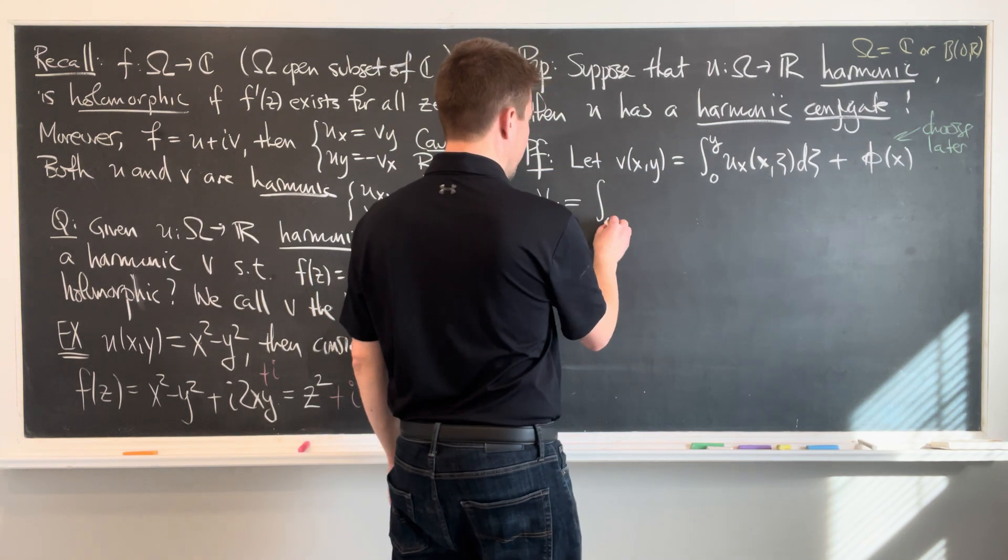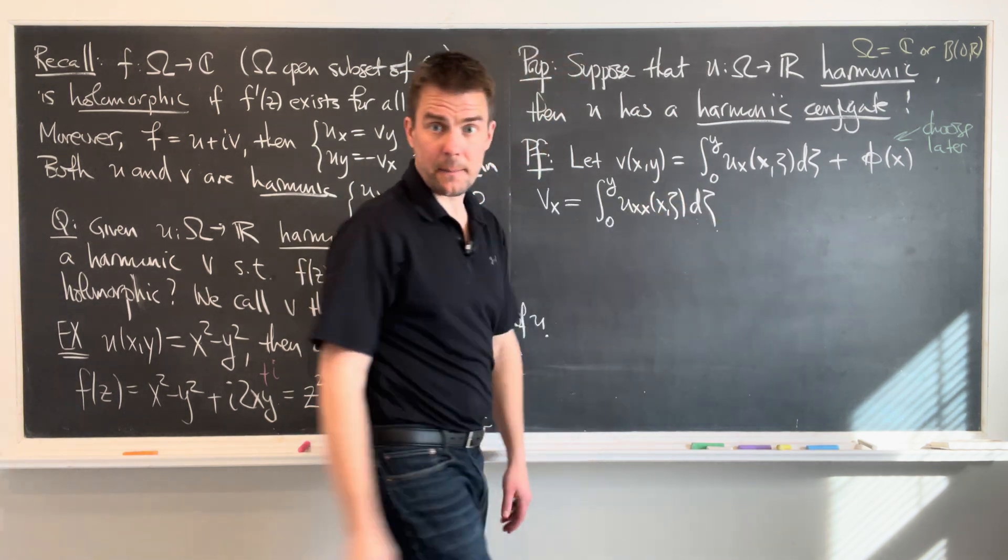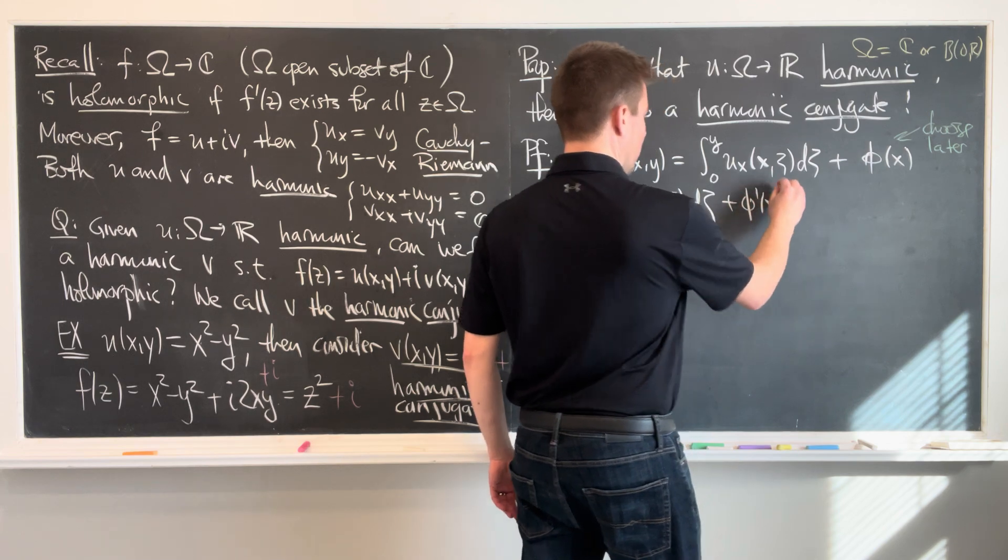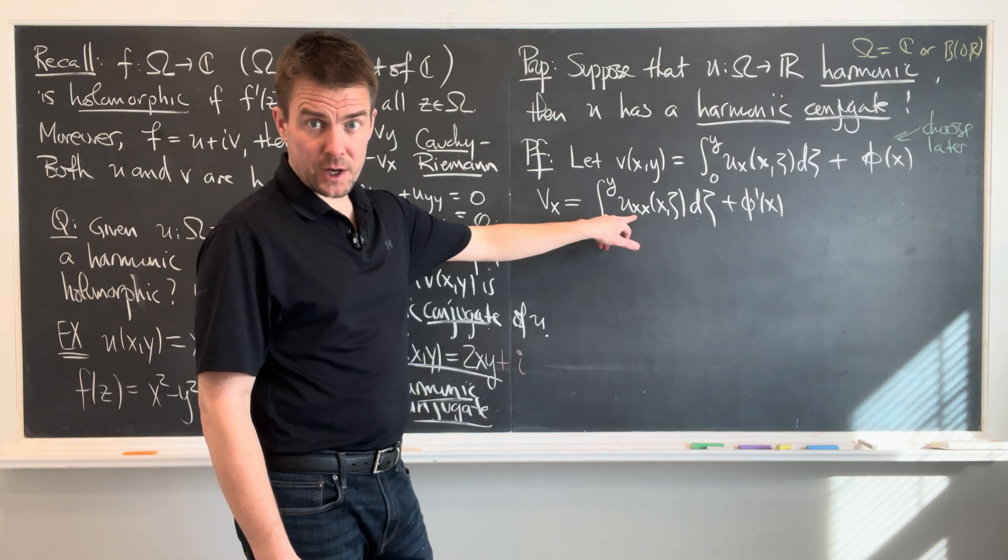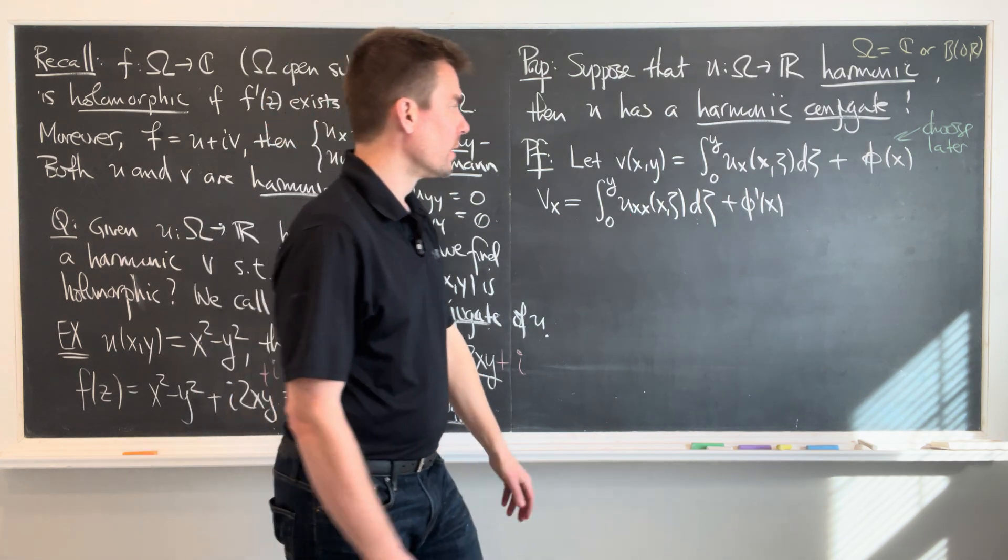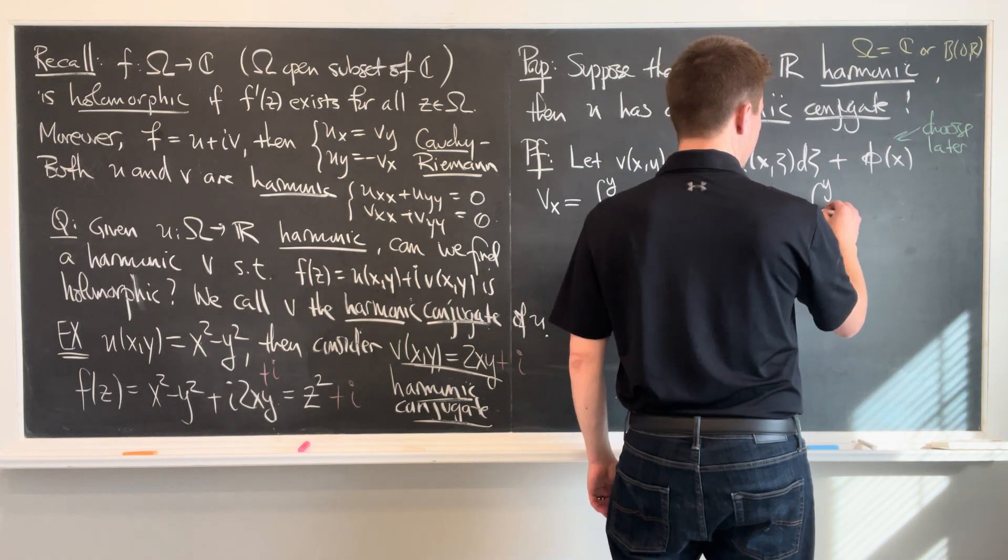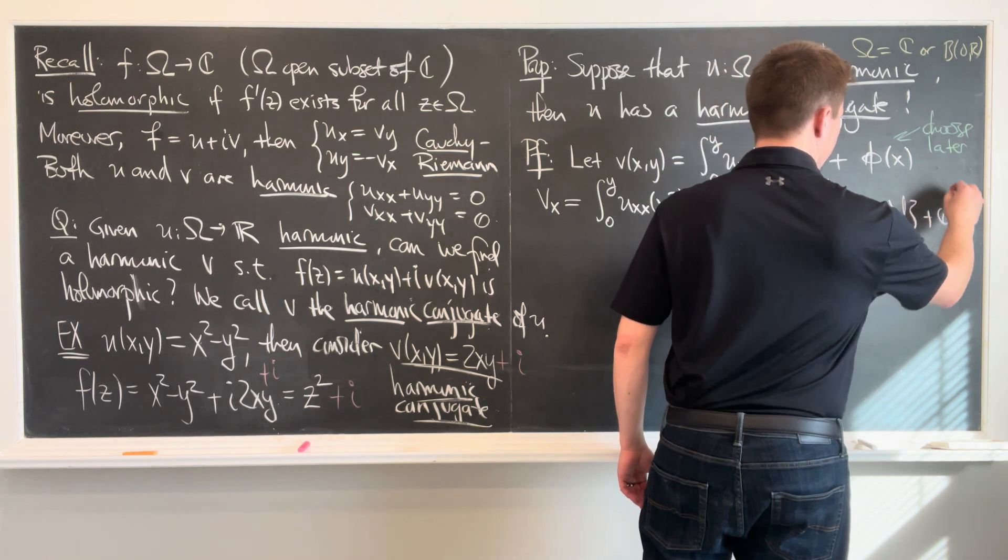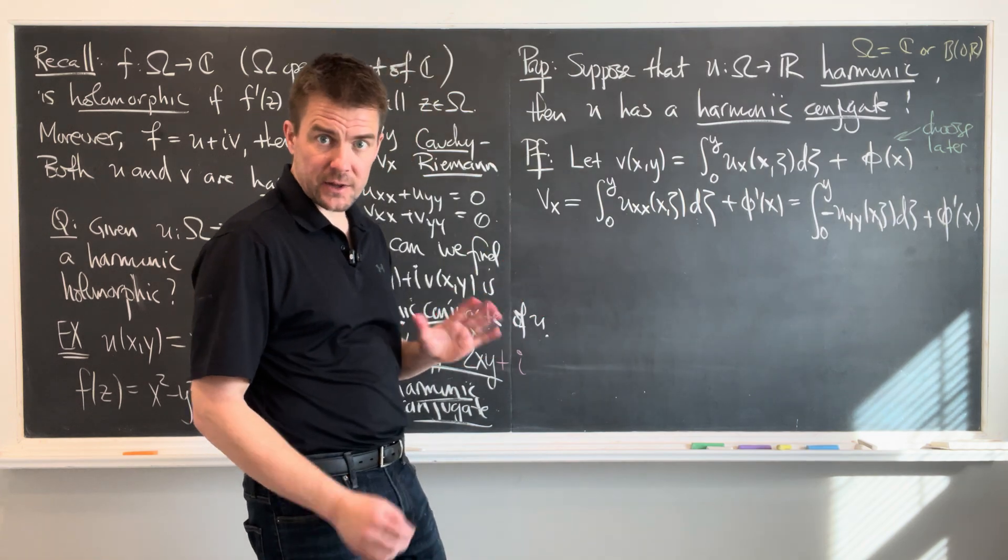So this is the integral from zero to y of uxx of x and zeta d zeta plus phi prime. Easy enough. Now, I know that uxx plus uyy is equal to zero. So I can replace this uxx in my integral with a negative uyy. So this is going to be the integral from zero up to y of negative uyy of x and zeta d zeta plus phi prime of x. Again, I'm using the fact that u is harmonic here. That's where the assumption comes into play.